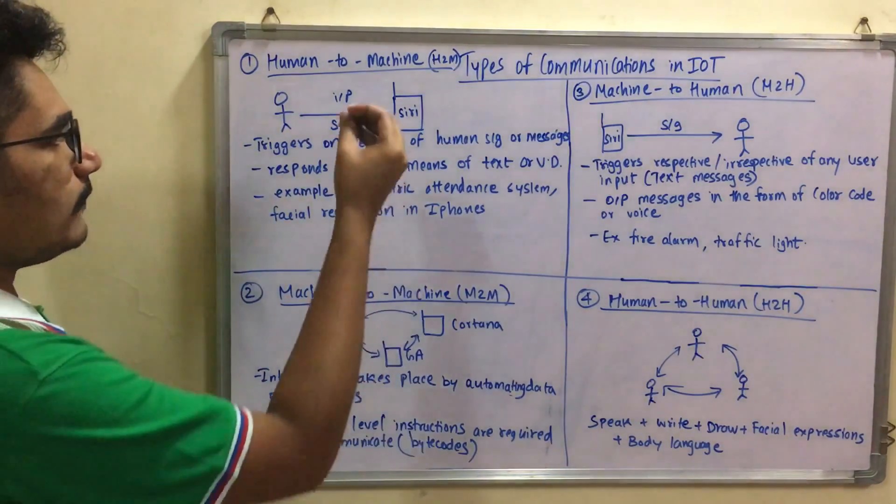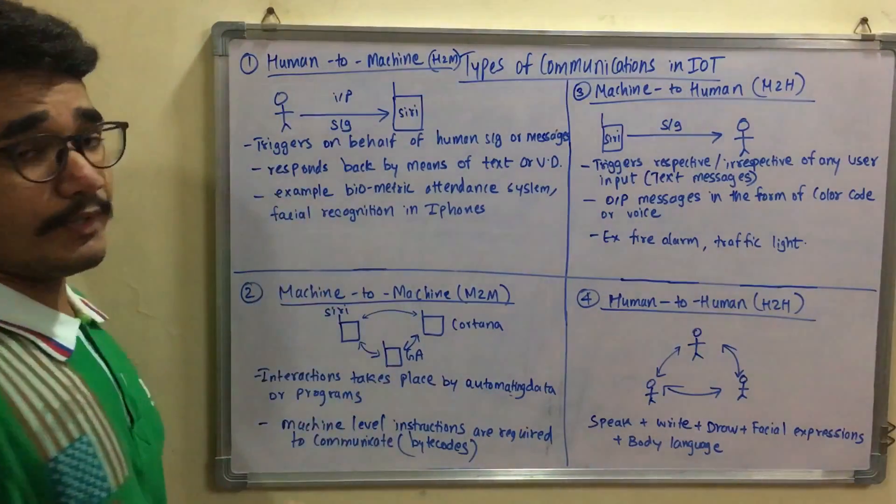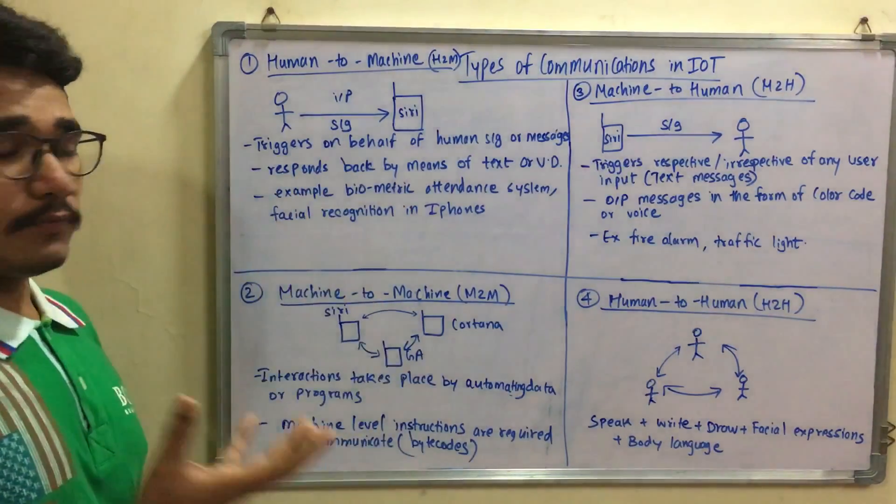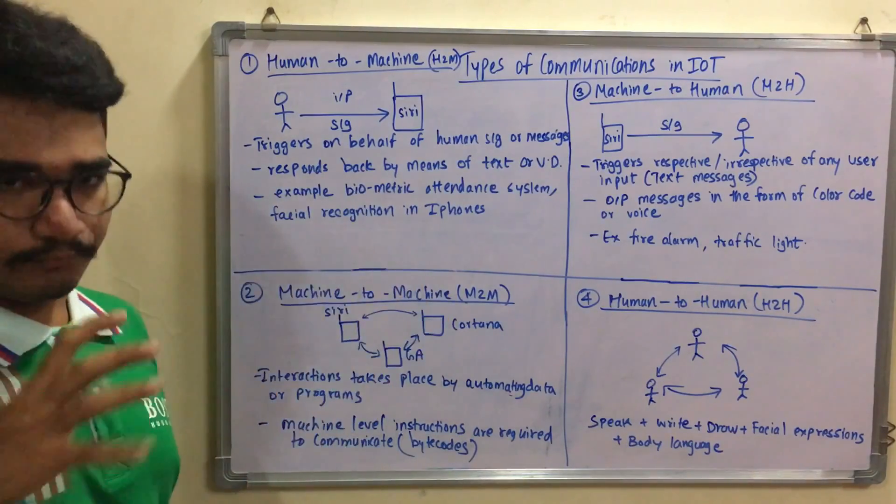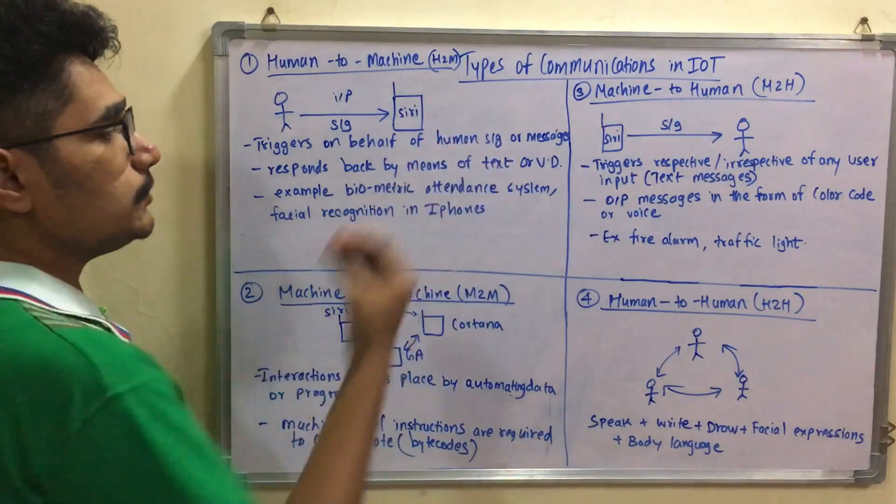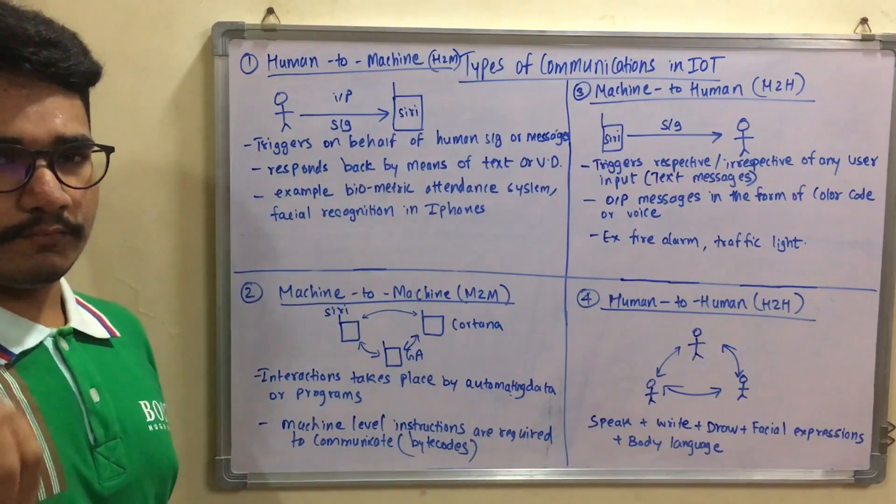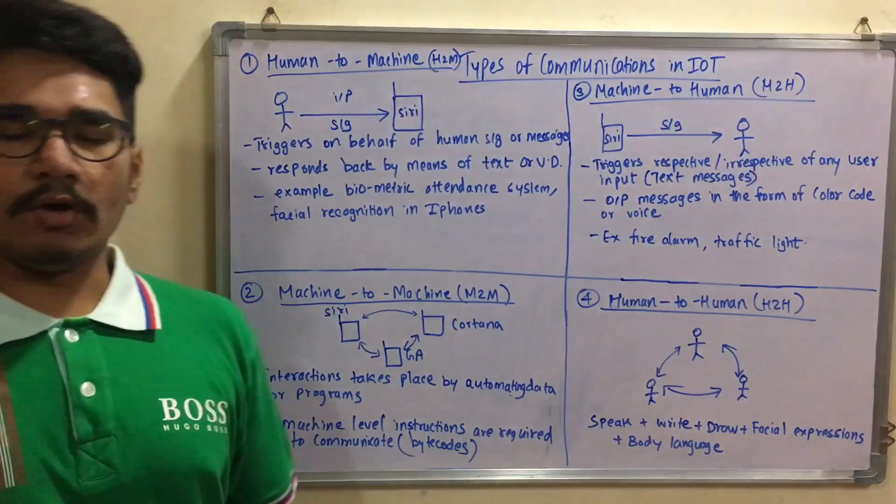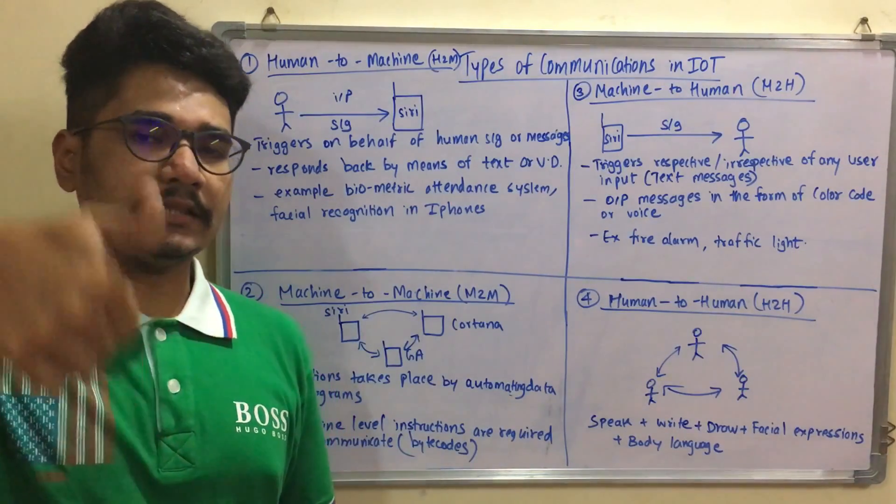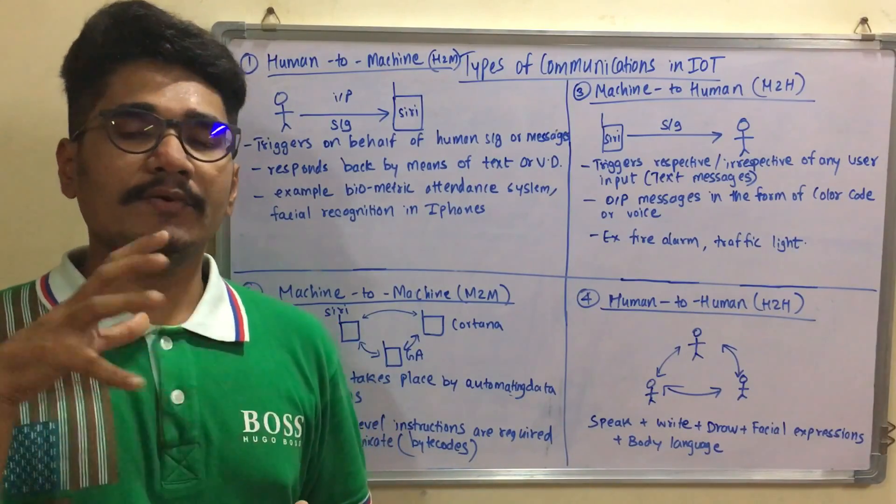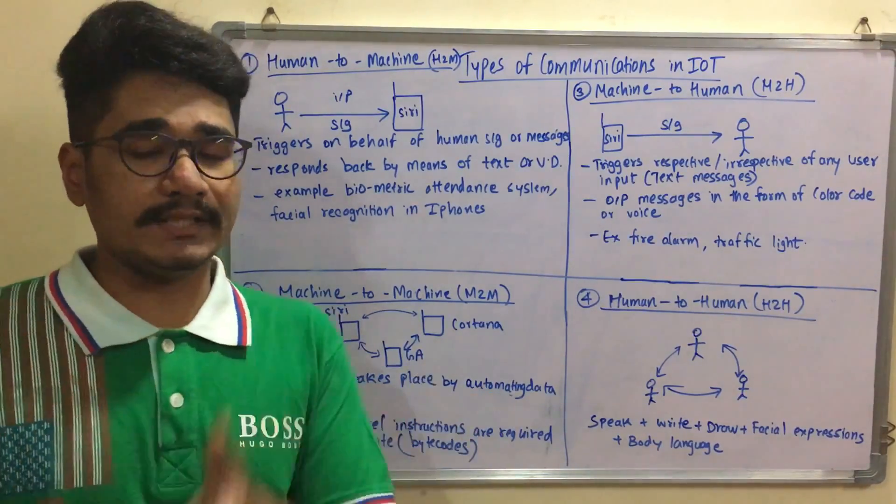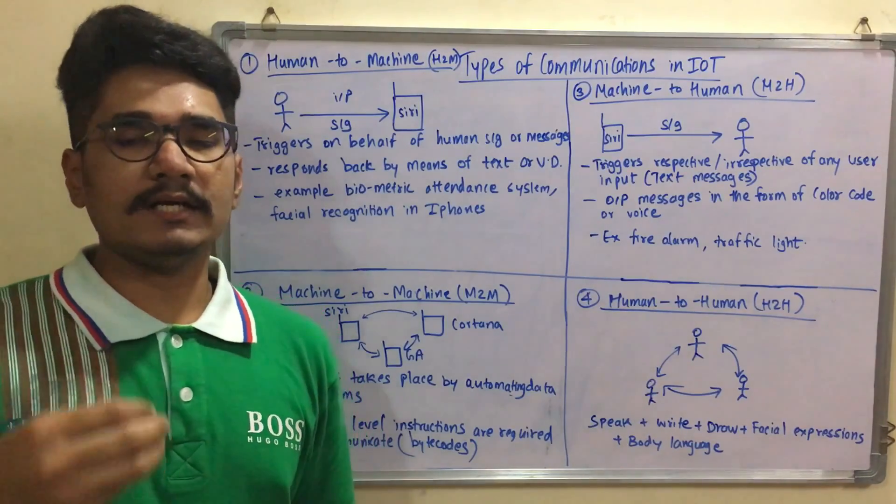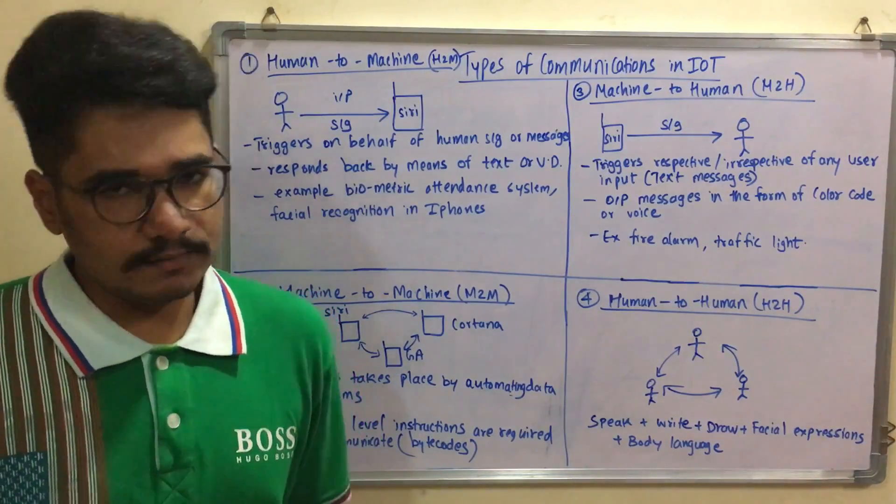This action triggers based on human signals or messages and responds back by means of text or VD which stands for visual display. It displays signals or color codes. A basic example is a biometric attendance system. In offices, we scan our thumb and by reading the thumb lines it identifies and matches the pattern in its database to determine whether the employee belongs to that office, then grants access to the door or entry mechanism. That's where human to machine interaction comes into picture.